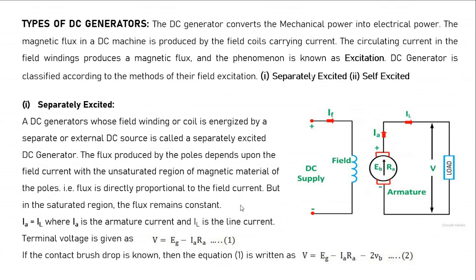Next, a very important topic is the types of DC generators. A DC generator converts mechanical power into electrical power. The magnetic flux in the DC machine is produced by the field coils carrying current. Field windings are wound on the poles, and when current flows in the field winding it magnetizes the poles. These exciting windings or field windings are responsible for the production of flux, and this phenomenon is called excitation.